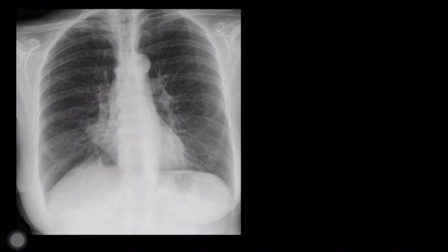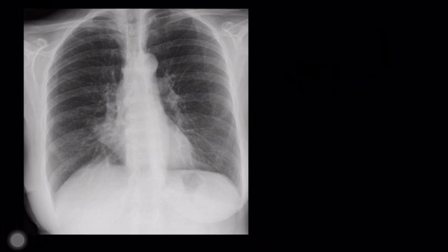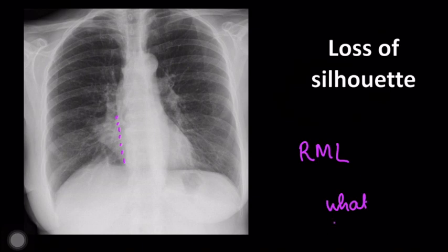You can see an abnormality here — an opacity. Next, you have to find out where this opacity is. For that, apply the silhouette sign. Look carefully: the right heart border cannot be delineated, which means the opacity is situated in the right middle lobe. So we have answered two questions — what is the abnormality (an opacity) and where it is (the right middle lobe).